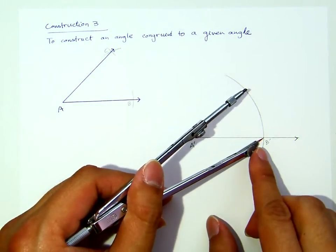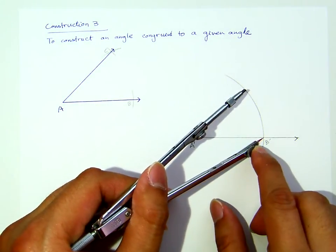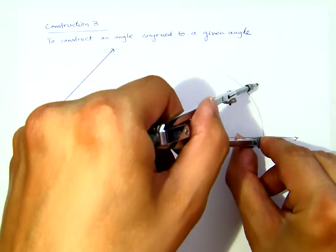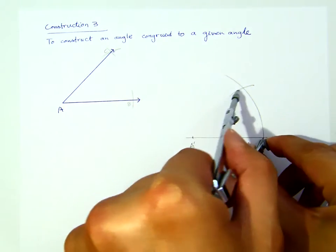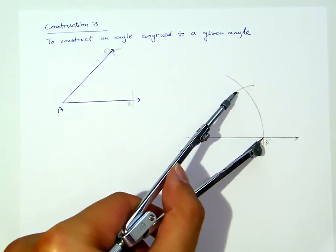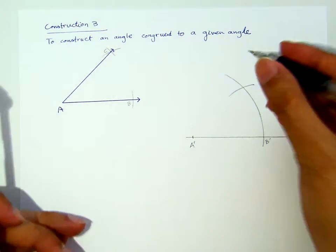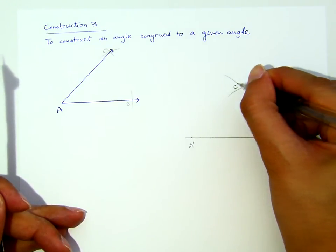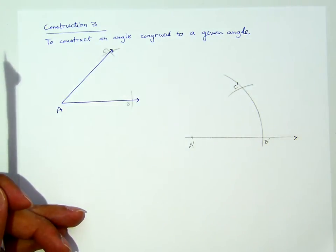Now then, that's what I use here. I put it at B', using the same opening. You see that? Now, that's the copy of point C. Let me put it here. That's my C'.